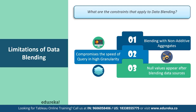Null values can sometimes appear in place of the data you want in the view when you're using data blending. This happens because of a few reasons: the second data source does not contain values corresponding to the primary data source, the data types of the fields you are blending are on different levels of detail, or the values in the primary and secondary data sources use different casing.